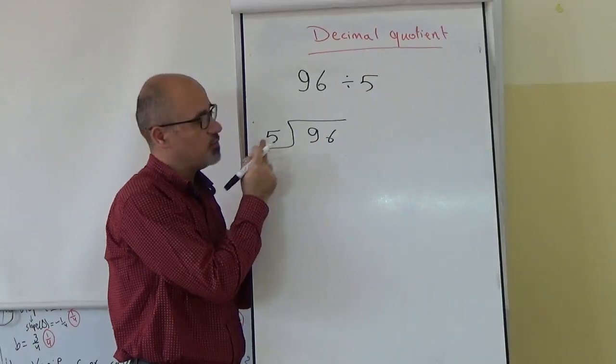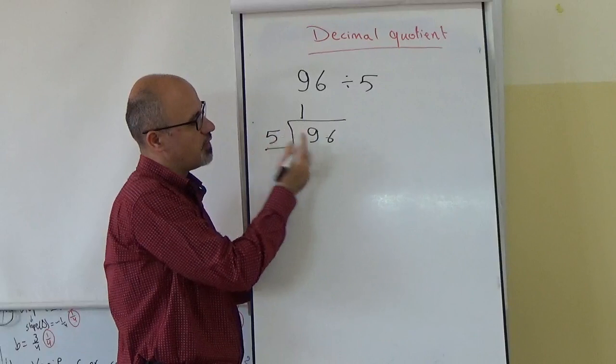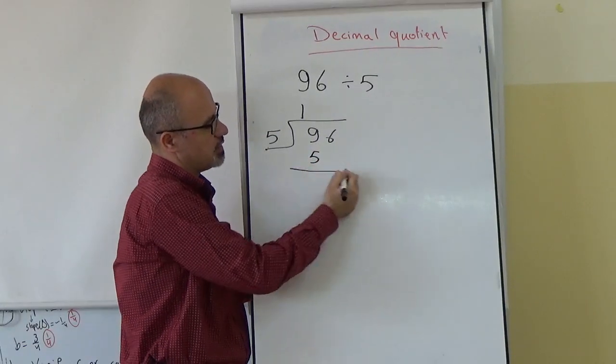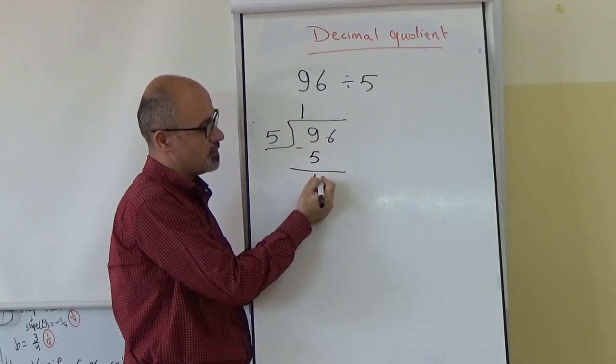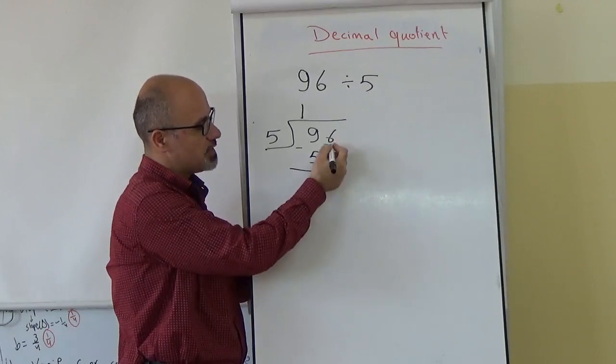9 divided by 5, it is 1. 1 times 5, 5. Now, subtract. 9 minus 5 is 4. Now, bring the 6 down.